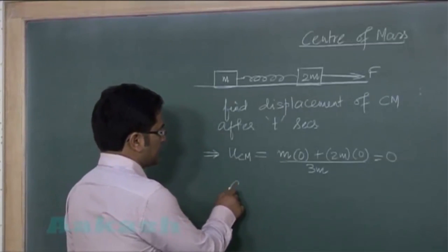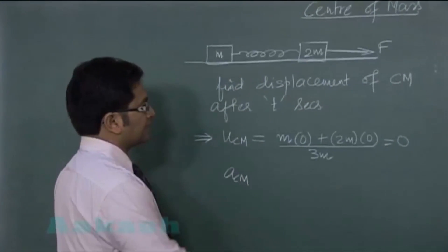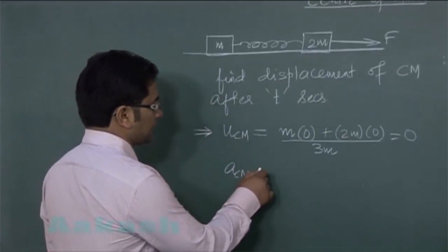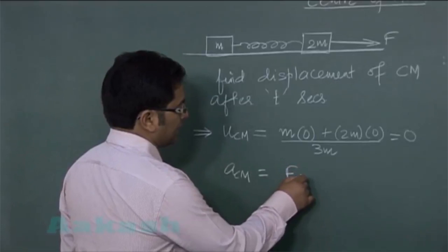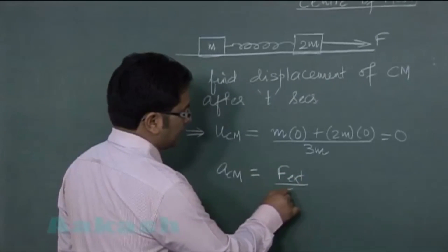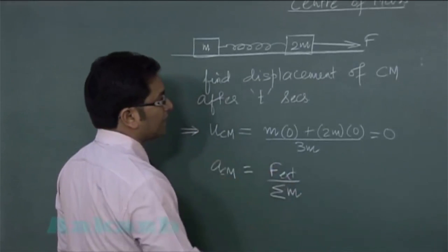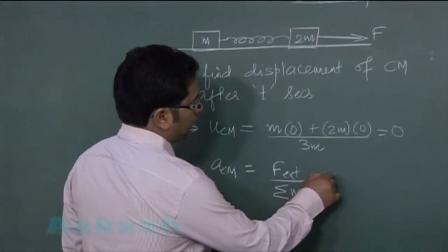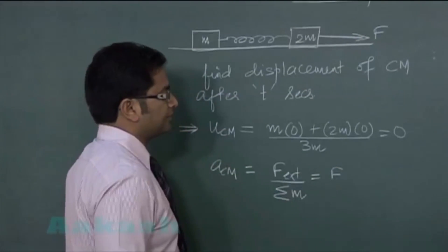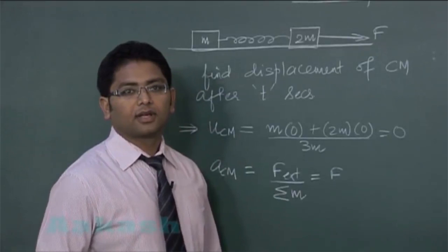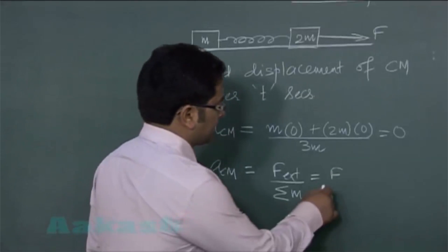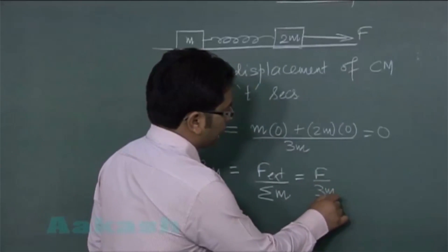फिर calculate करते acceleration of center of mass. That is very easily calculated by f external divided by summation of all the mass. f external ka value f, summation of all the mass that is equal to 3m.